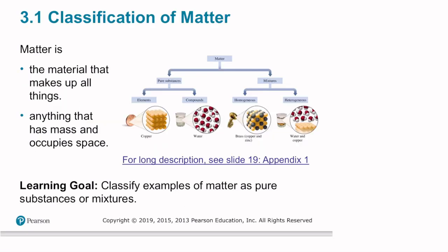Matter is the material that makes up all things. It's anything that has mass and occupies space. We will classify matter into two broad categories of pure substances and mixtures, and then further separate those categories into subcategories of elements, compounds, homogeneous mixtures, and heterogeneous mixtures.